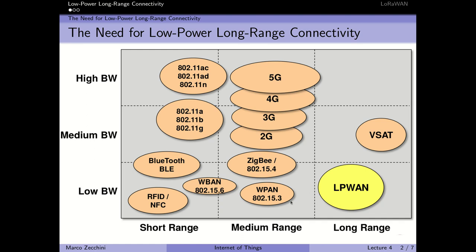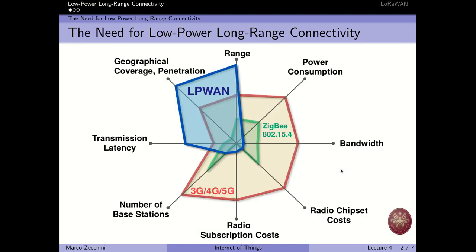We are not interested in using a lot of bandwidth. Other technologies like Bluetooth and Wi-Fi work only at short range but with high bandwidth. 5G, 4G, and Zigbee — even though it is a Bluetooth-like protocol — can reach farther ranges through mesh networks. LPWAN protocols are placed in the long-range, low-bandwidth region of this chart.